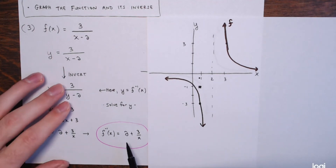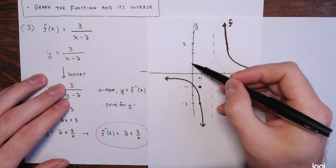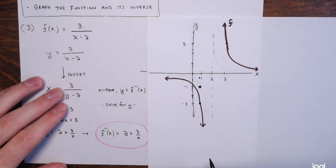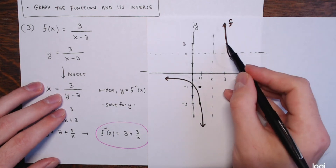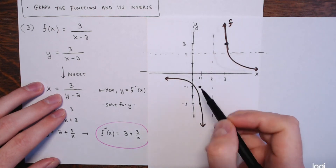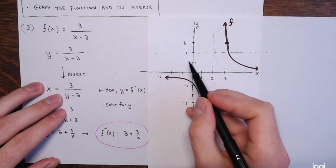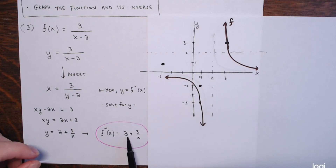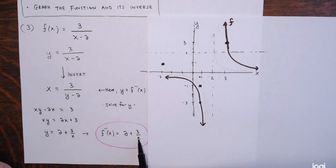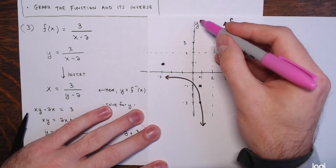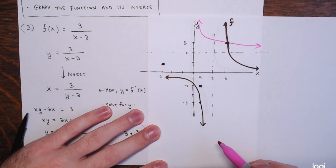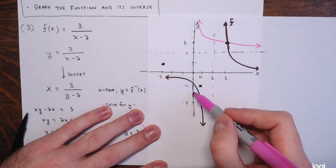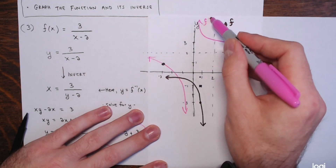For f inverse — f inverse of x = 2 + 3/x — x can't be 0, so the y-axis is a vertical asymptote instead of the x-axis being horizontal. And instead of x = 2 being a vertical asymptote, y = 2 will be a horizontal asymptote. The point (3, 3) is on both. And instead of (1, −3) on f, f inverse has (−3, 1).